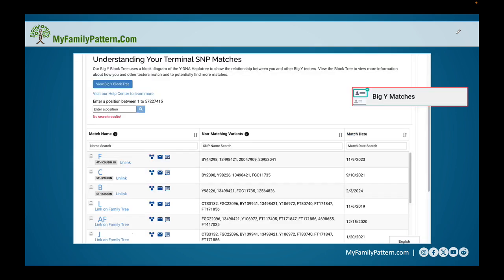So the first one we want to look at is your Big Y matches. If you're used to looking at DNA matches, perhaps associated with autosomal DNA, one of the first things we always do is look at our matches.